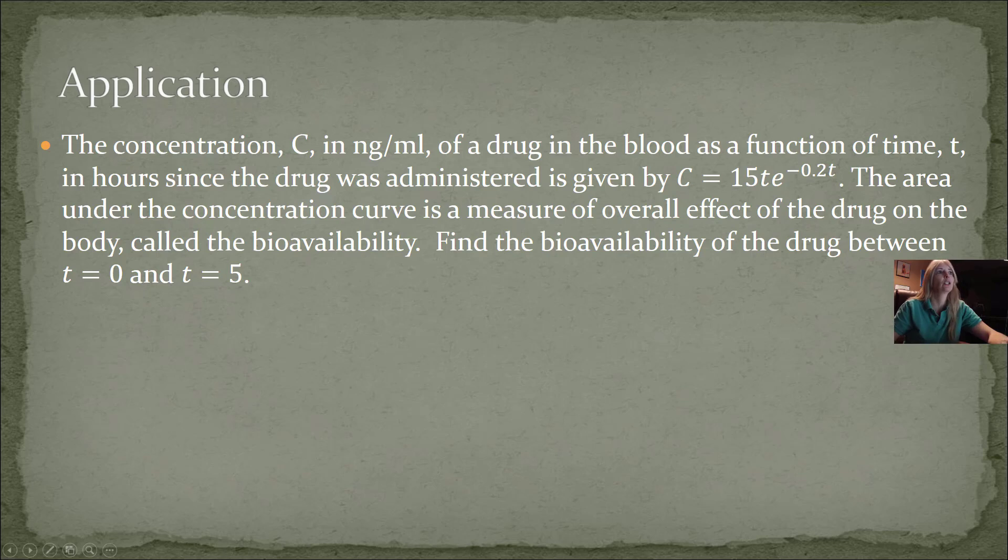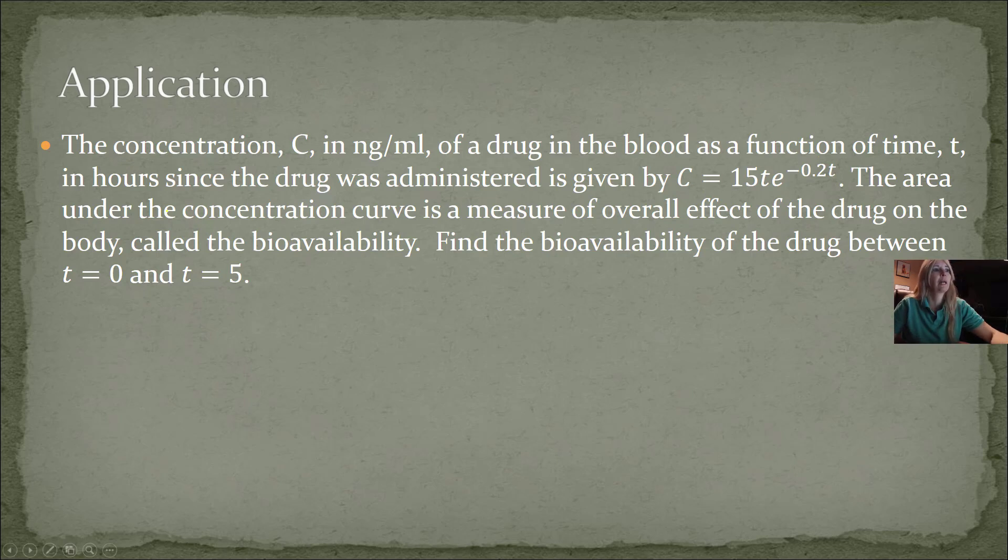So if I do the last problem, which is an application, says the concentration C in nanograms per milliliter of a drug in the blood as a function of time t in hours since the drug was administered is given by this function. So I know that's going to be my function I'm going to use. And so here is my function, which I can already see that it's a product. And so e to the negative 0.2t dt.